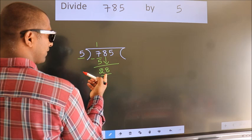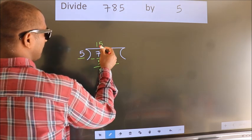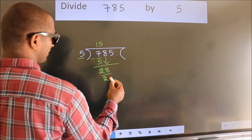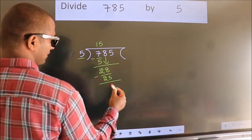A number close to 28 in 5 table is 5 fives, 25. Now, we should subtract. We get 3.